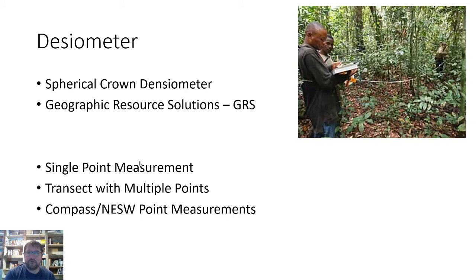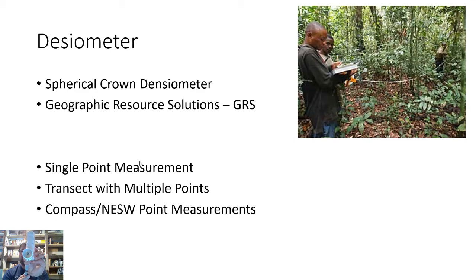Let's talk about densiometers — this is probably still today the most used system to get canopy cover. Again there are two main types: the spherical crown densiometer, which is a mirror, and the Geographic Resource Solution or GRS, which is basically a tube with a mirror in it. Inside you can see there's a mirror with some levels, and that allows you to get canopy cover.